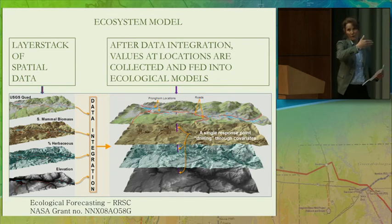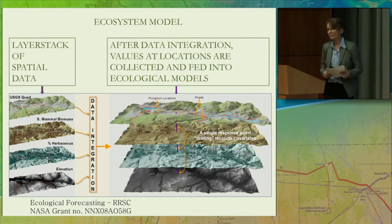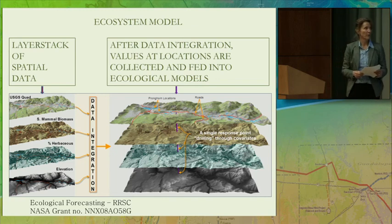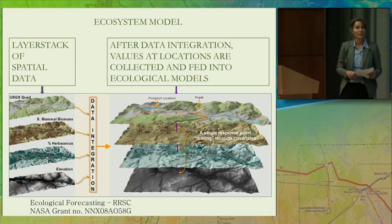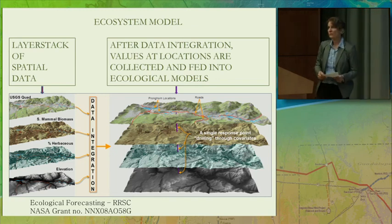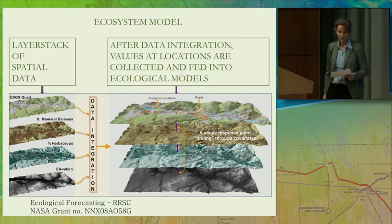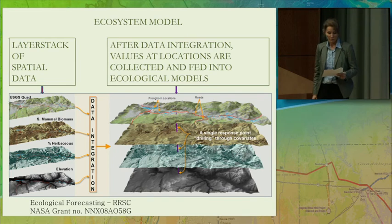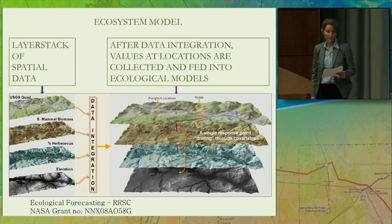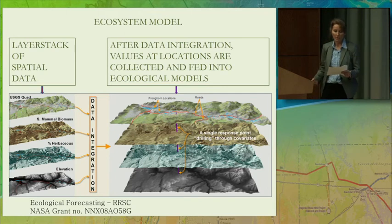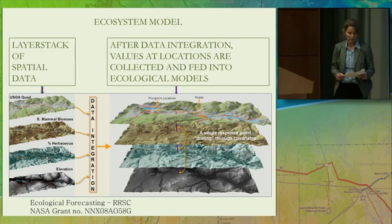These purple punch-throughs are arrayed across the landscape, and they can be developed according to different sampling regimes — randomly or at different sampling intensities. The appeal of this layer stack and punch-through approach is threefold: it's absolutely simple, it's scalable up or down on several levels, and it's amenable to scenario building, or what-if models, as we'll see in a moment.